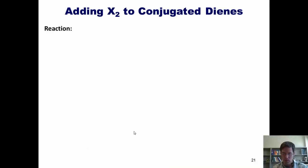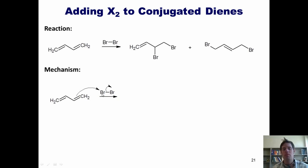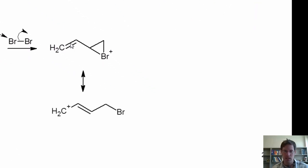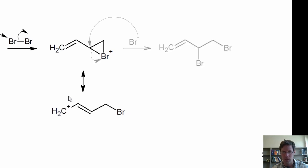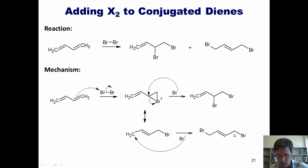Let's try adding a halogen to our diene. When we take a diene and add bromine, we get two products. Electrons come out and grab a bromine, forming a bridged bromonium intermediate. These electrons can flip over and open the ring to give a resonance-stabilized carbocation. If bromide comes in and kicks this open, I get the first product; if bromide comes in at the other position, I get the second product.